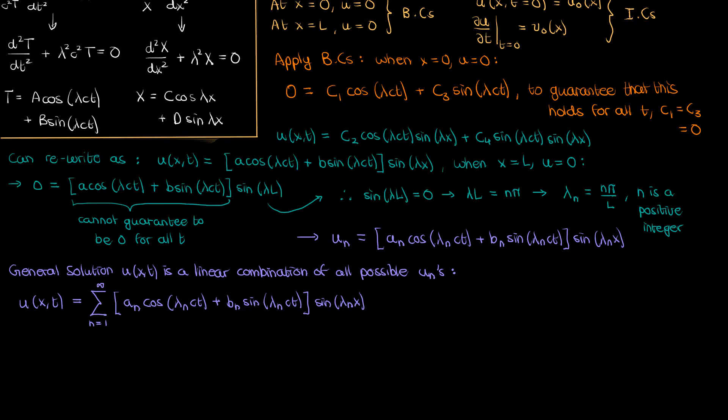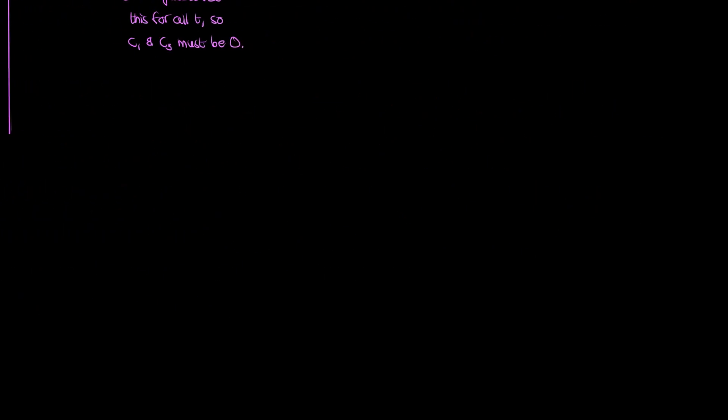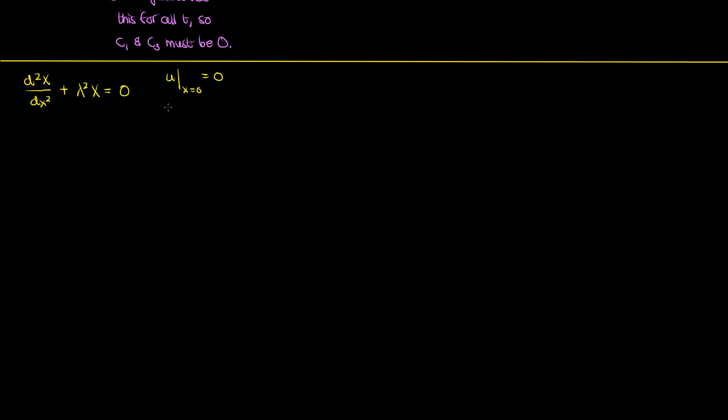The uniqueness to this linear combination of an infinite set of solutions comes with applying the initial conditions which allows us to find values for the coefficients a sub n and b sub n. But before I do that let's take a short detour. Remember near the start of the video how we were solving for the function capital X? Well this is the ODE that we were solving and these are the two boundary conditions we had on the spatial variable x.